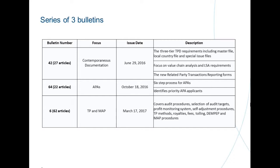Circular 64 focuses on advance pricing agreements (APAs). The tax authority provides six specific steps to follow for an APA request. During this request, it is particularly mentioned that if you want priority for an APA application, you need to discuss value chain analysis and location-specific factors in your application.